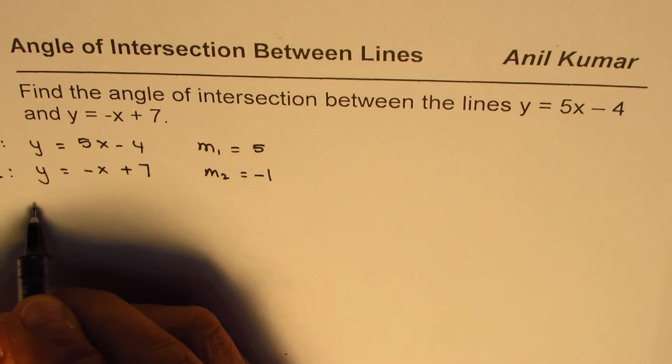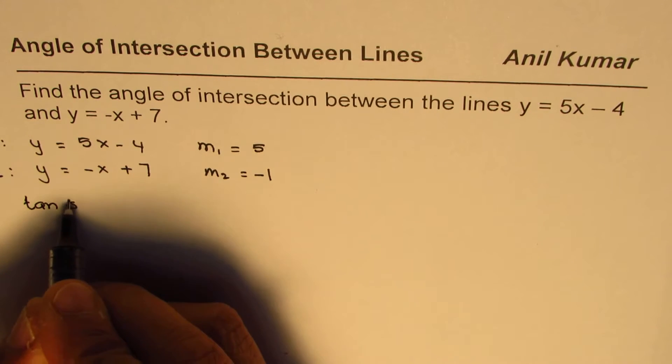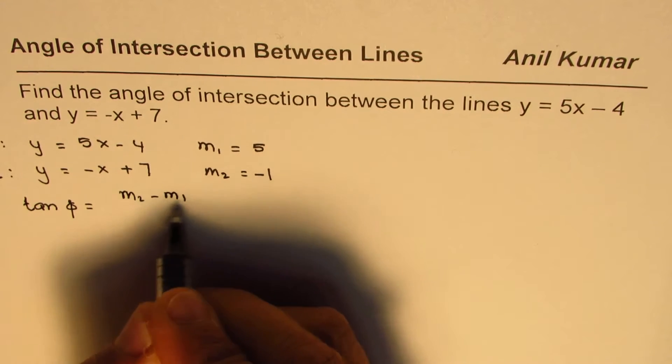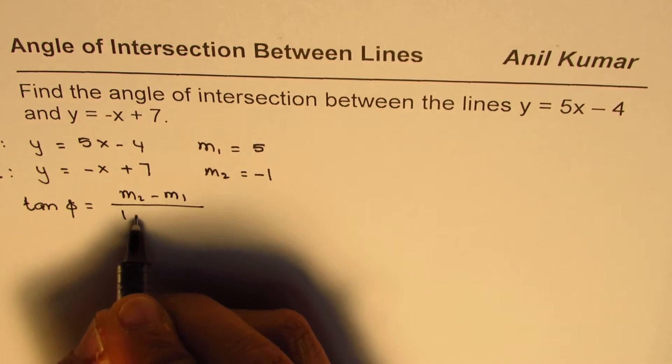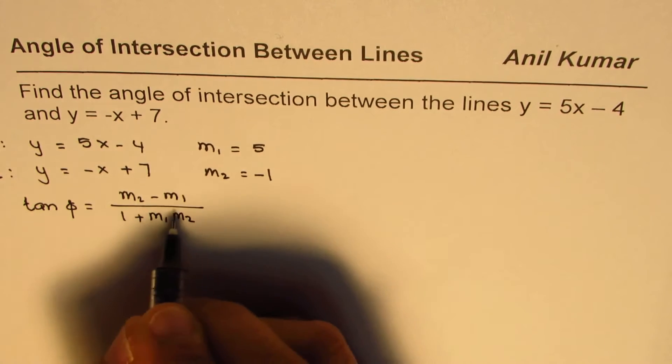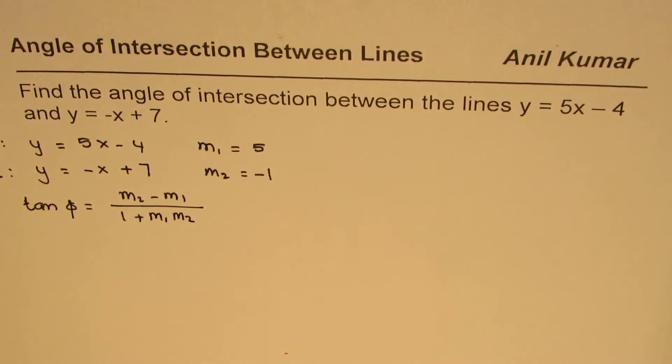Now the formula for angle is we can write in tan form that is tan of angle between the lines is difference of slope m2 minus m1 divided by 1 plus product of slope that is m1 times m2. So this formula can be used to find the slope of intersecting lines.